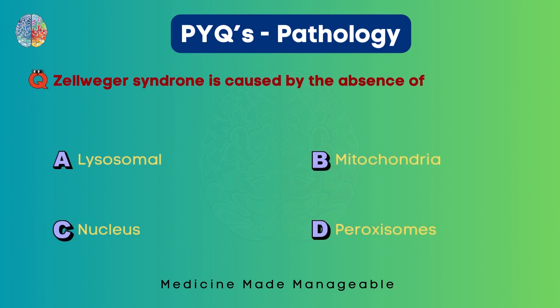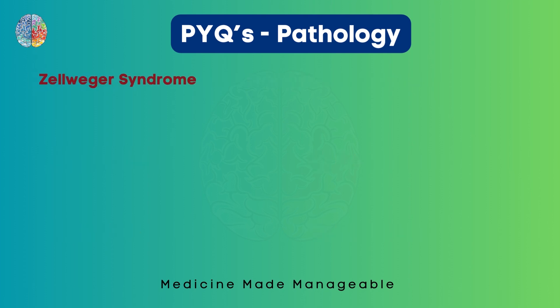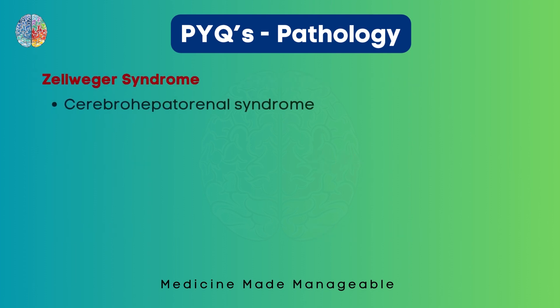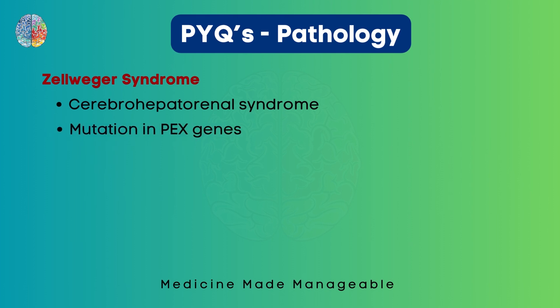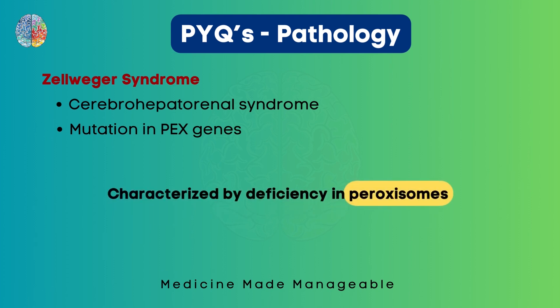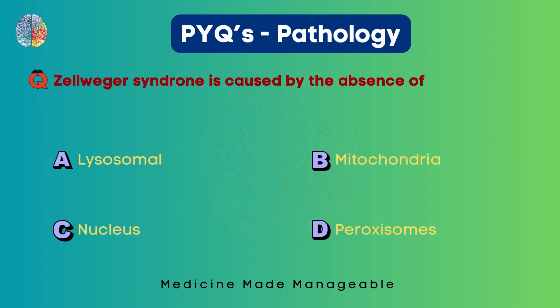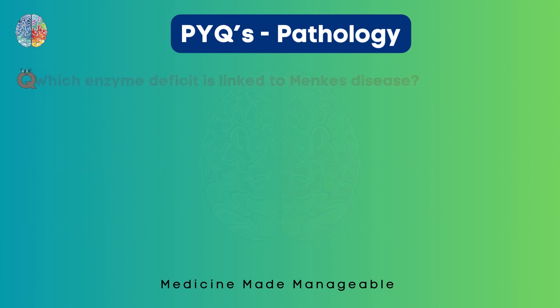Zellweger syndrome is caused by the absence of lysosomes, mitochondria, nucleus, or peroxisomes? Zellweger syndrome is also called cerebro-hepato-renal syndrome. It is caused by mutations in the PEX genes and is characterized by the deficiency of peroxisomes. So the answer is peroxisomes.